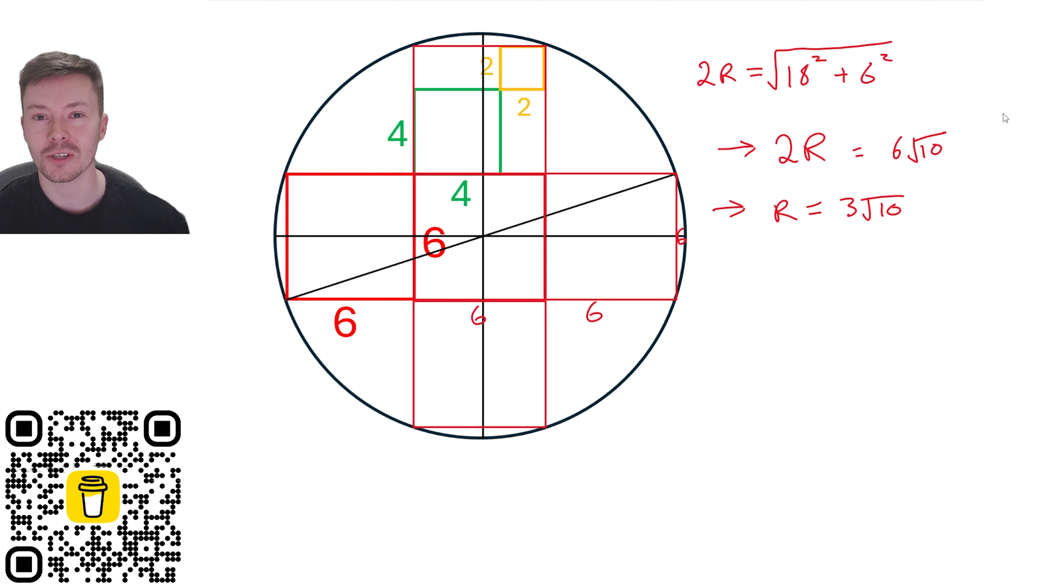And obviously, once you've got the radius of your circle, it's quite straightforward to find the area of your circle. And so, the area is Pi times 3 root 10 all squared, which gives us an area of 90 Pi units squared.